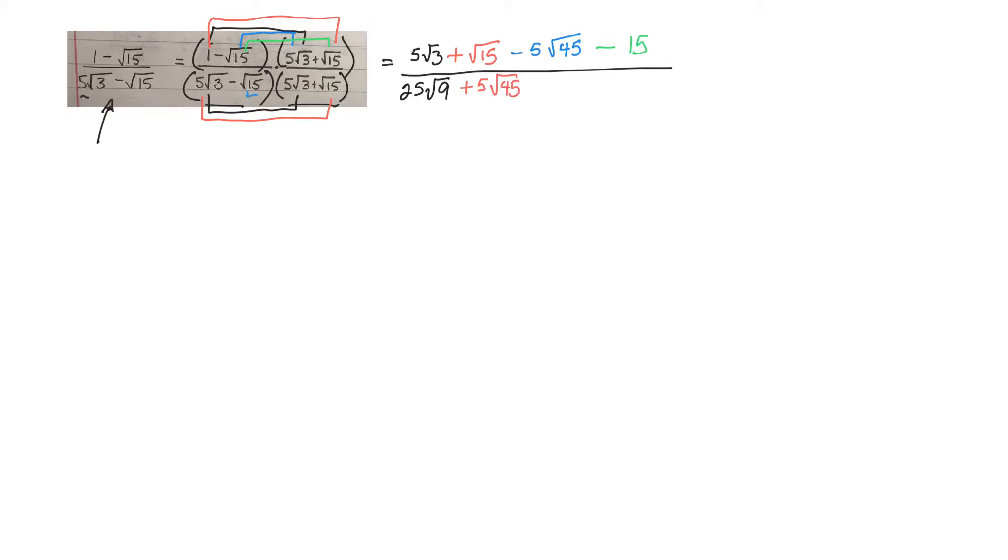And then this one times this one will be minus 5 root 45. And lastly, this one times this one will be minus or same as the top. Root 15 times root 15 is root 225, which is just plain old 15.